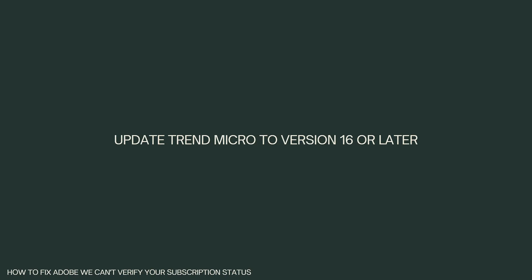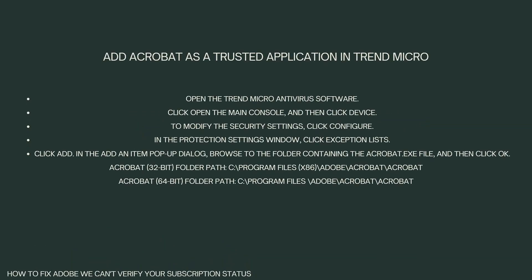First, you need to update Trend Micro to version 16 or later. You can update Trend Micro Antivirus from within its UI or from the website, which is trendmicro.com. Then next, add Acrobat as a trusted application in Trend Micro.